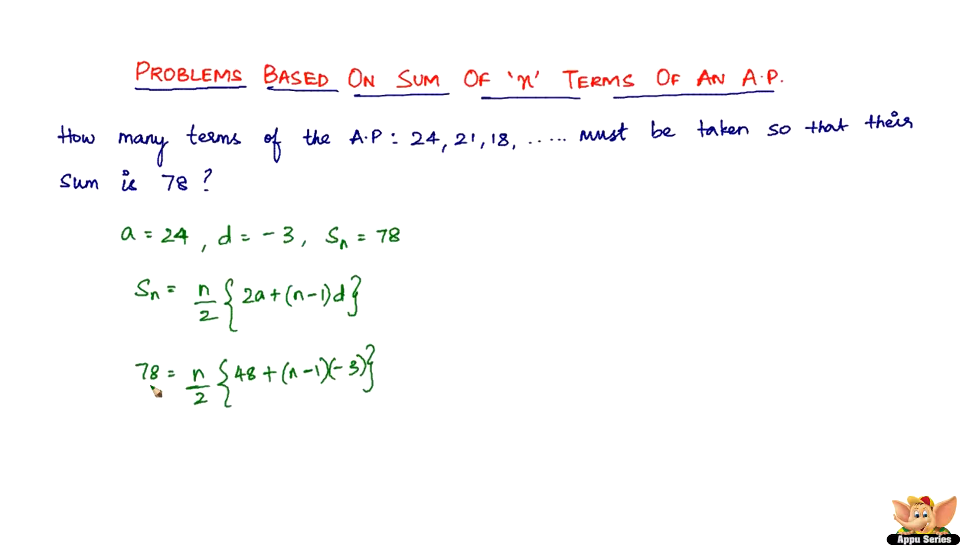Now let's take this 2 to the left hand side, so it becomes 156. 78 times 2 is 156, so 156 equals n into 48 minus 3n minus 3n squared. So you've got a quadratic equation.